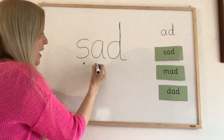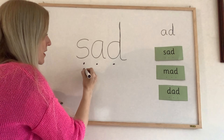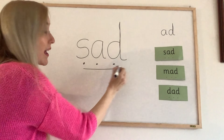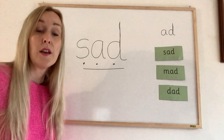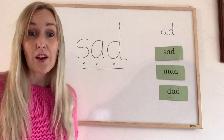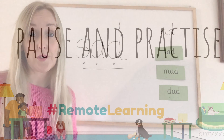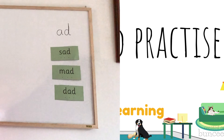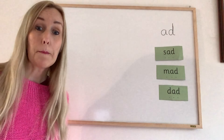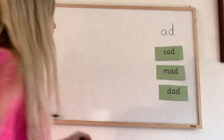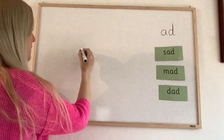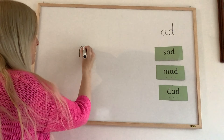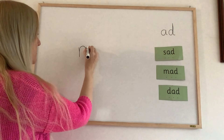Sad, mad, dad. All these words rhyme. We all end in ad. A, d — ad. Sad, mad, dad.